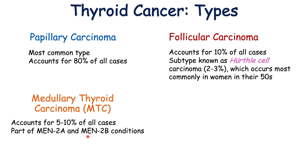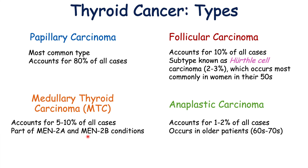MEN2A and MEN2B are genetic conditions that increase the risk of other endocrine disorders, including pheochromocytoma and hyperparathyroidism. The fourth main type of thyroid cancer is anaplastic carcinoma, which accounts for 1 to 2% of all cases. It occurs in older patients — those in the 6th to 7th decade of life, so patients in their 60s and 70s.